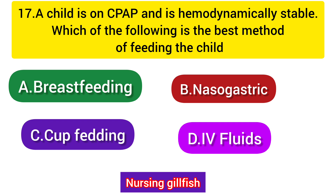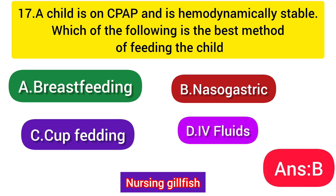Next question: A child is on CPAP and is hemodynamically stable. Which of the following is the best method of feeding? Option A: Breastfeeding, Option B: Nasogastric feeding, Option C: Cup feeding, Option D: IV fluids. Breastfeeding is not possible and IV fluids is not a feeding method. The correct answer is Option B - Nasogastric tube feeding, because the baby is stable but not able to swallow.